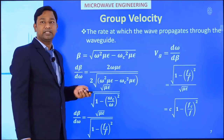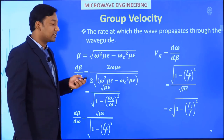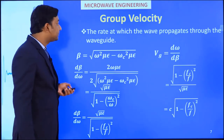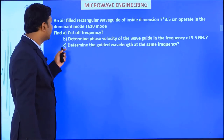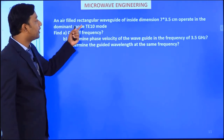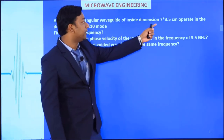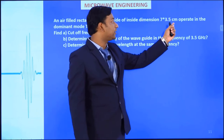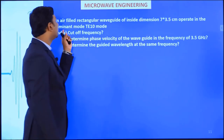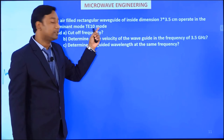Now we will see some questions based on cutoff frequency, cutoff wavelength, group velocity and phase velocity. The question is: An air-filled rectangular waveguide of inside dimension 7 × 3.5 cm² operates in the dominant mode, that is TE₁₀ mode.